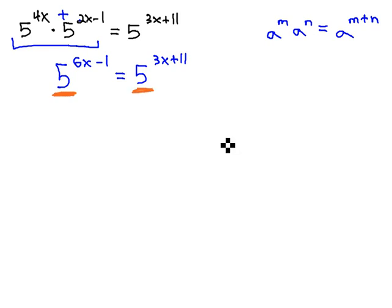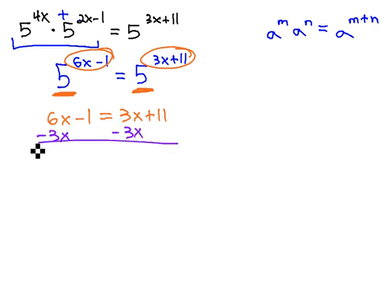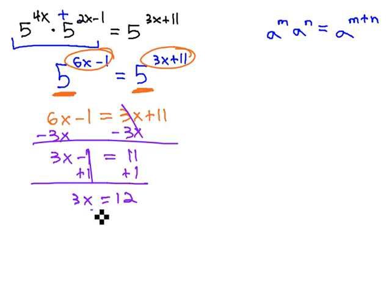And now, we do have that same base on both sides, so the exponents must be equal. 6x minus 1 must equal 3x plus 11, and we have a simple equation we can quickly solve. Subtract 3x, giving us 3x minus 1 equals 11. Adding 1 to both sides, giving us 3x equals 12. And finally, dividing both sides by 3, x is equal to 4.